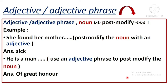Adjective or adjective phrase can post-modify a noun. 'She found her mother sick' — here 'sick' is an adjective post-modifying 'mother.' 'He is a man of great honor' — here 'of great honor' is an adjective phrase post-modifying 'man.'